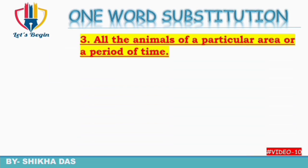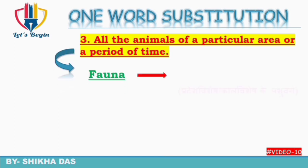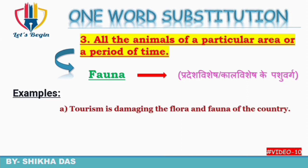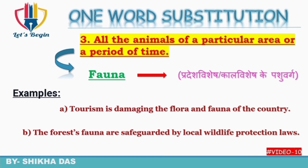Third question: all the animals of a particular area or a period of time — ek particular period ya jagah ke saare animals. Isko kaha jata hai one word mein 'fauna'. Fauna ko Hindi mein kehte hain 'pradesh vishesh ya kaal vishesh ke pashu varg'. Example: 'Tourism is damaging the flora and fauna of the country.' Flora vanaspati jat ko kaha jata hai aur fauna animals ko.